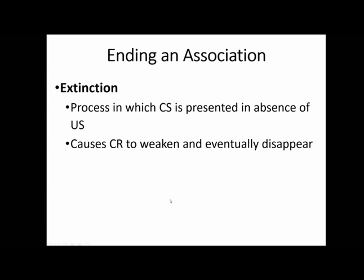Now that we've acquired this association — we've learned that the unconditioned stimulus and conditioned stimulus are linked — what happens next? Now we talk about ending that association. This process is called extinction. To go through extinction, you present the conditioned stimulus in the absence of the unconditioned stimulus. You ring the bell for the dog but don't give them food, showing them that the bell no longer means food. This should cause the conditioned response to weaken and eventually disappear.